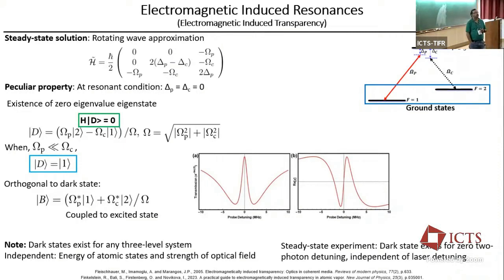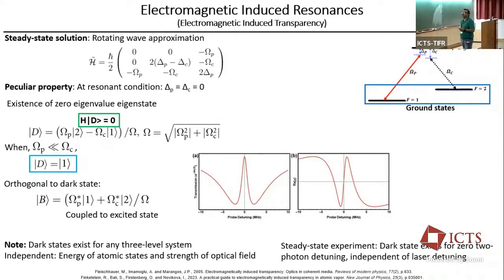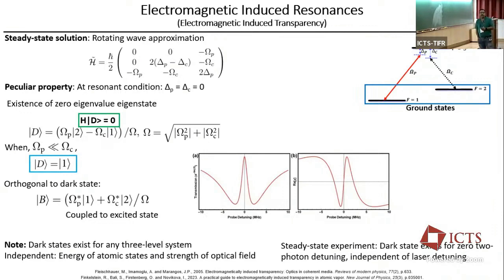If I apply the resonant condition — delta_P minus delta_C, or two-photon resonance — setting delta_P equal to delta_C equal to zero, this Hamiltonian has the peculiar property of giving a zero eigenvalue eigenstate. That state is commonly known as a dark state, which is a superposition of the two ground states. When the probe beam intensity is much less than the pump, this dark state turns out to be the F=1 state where we shine the probe beam. In that condition, the probe becomes decoupled from the excited state and you see transmission where absorption was expected.